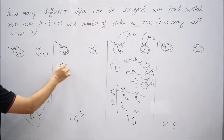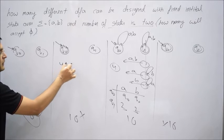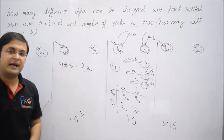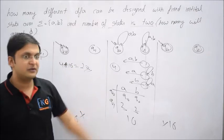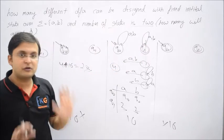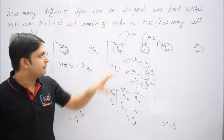So you see four cases here and then 16 cases here, so again four plus 16, 20 DFAs are there which will accept empty language.